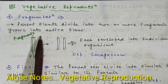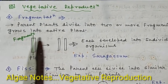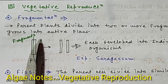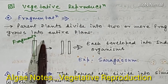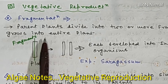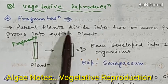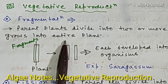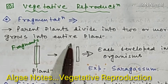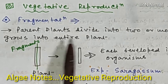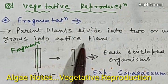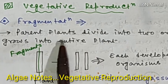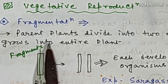Welcome students. In the previous two lecture videos I talked about the general features of algae and the range of thallus structure of algae. In this video I shall tell you about the vegetative reproduction of algae. In the reproduction series we will make three separate tutorial videos covering vegetative reproduction, asexual reproduction, and sexual reproduction.